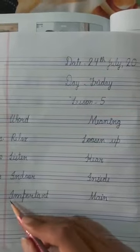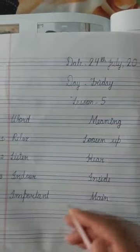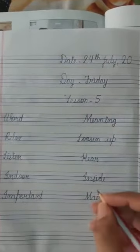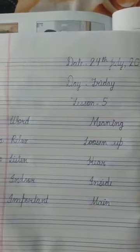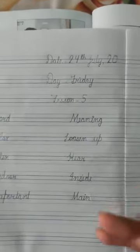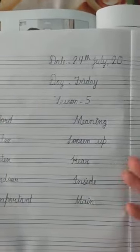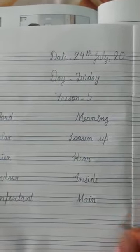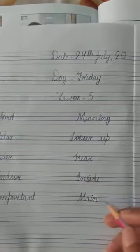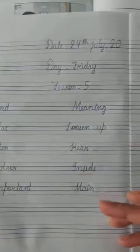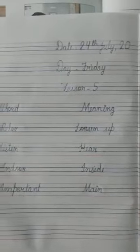Fourth is 'important' — i-m-p-o-r-t-a-n-t. Important matlab main jab koi cheez ki value zyada ho, koi important cheez ho, main cheez ho — m-a-i-n, main. Clear. Thank you.